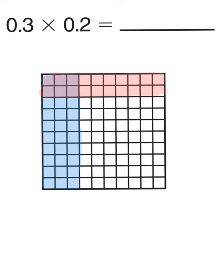We have used our decimal model to shade our 3 tenths blue and our 2 tenths red. Now, like we learned in our previous lesson, we count up where they overlap. We can see that we have 1, 2, 3, 4, 5, 6 that are shaded both blue and red. So, 3 tenths times 2 tenths equals 6 hundredths.